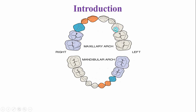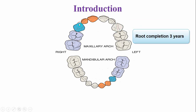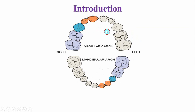These teeth emerge into the oral cavity at around 19 months, and the root is completed around the age of 3 years. They have the function of punching or tearing food, and they remain in service for about 9 years after eruption, after which they are replaced by the permanent maxillary canines that erupt at the age of 11 to 12 years.